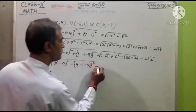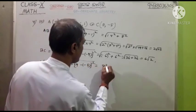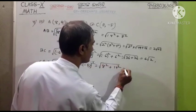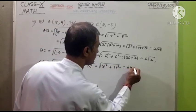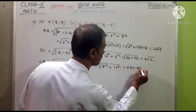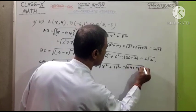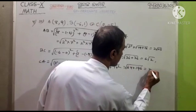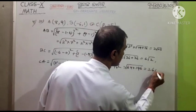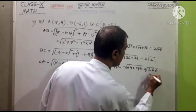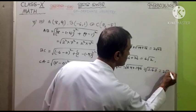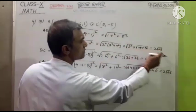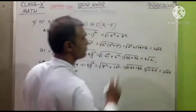Is equal to 8 square plus 14 square. 8 square is 64 plus 14 square is 196. This number is 260. You can write the number 2 root 65. I was able to get out of 65, so I was able to get the result.